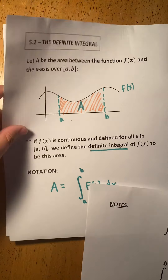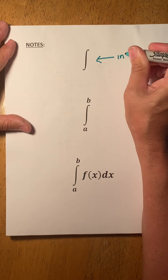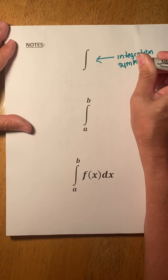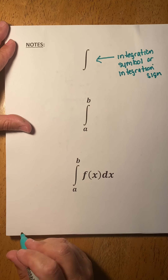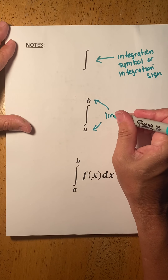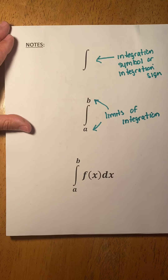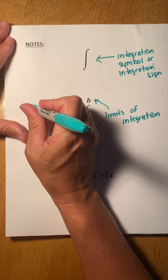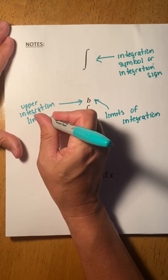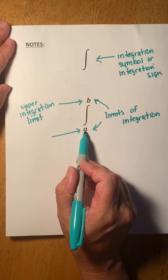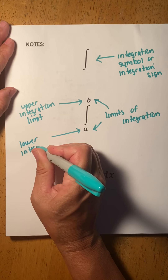Notation is very important. This symbol is called an integration symbol or integration sign. The two numbers at the top and bottom are called our limits of integration. The one on top is called the upper integration limit, and the one on the bottom is called the lower integration limit.